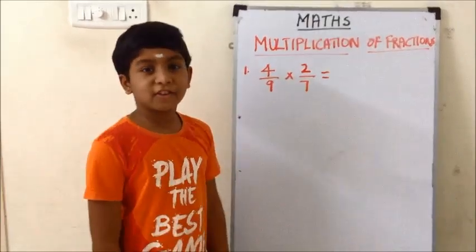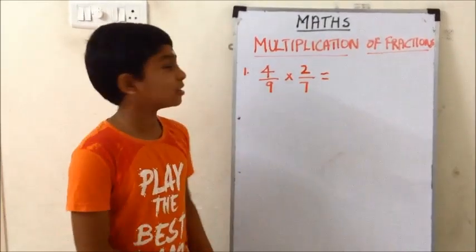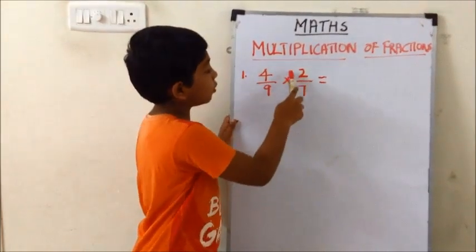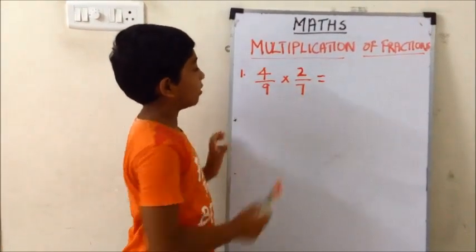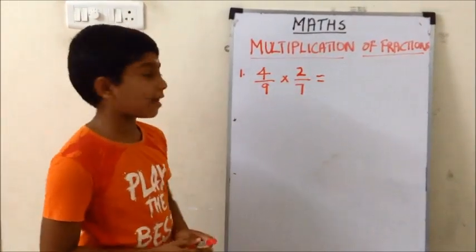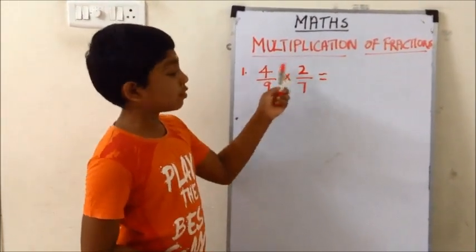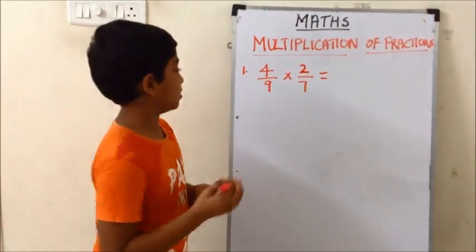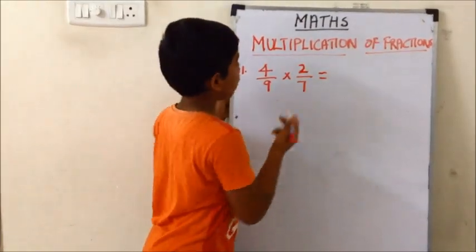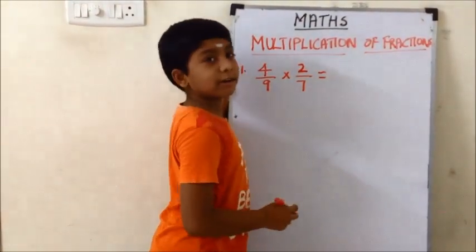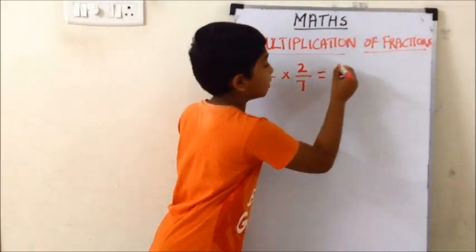The first question is 4/9 into 2/7. First we need to multiply the numerators. 4 into 2 is equal to 8.